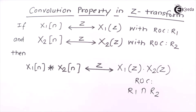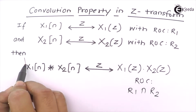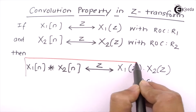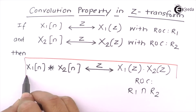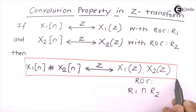So the Z transform of a convolution is nothing but a multiplication of the transfer functions in the Z domain for individual signals. This is the property. Let's prove it.